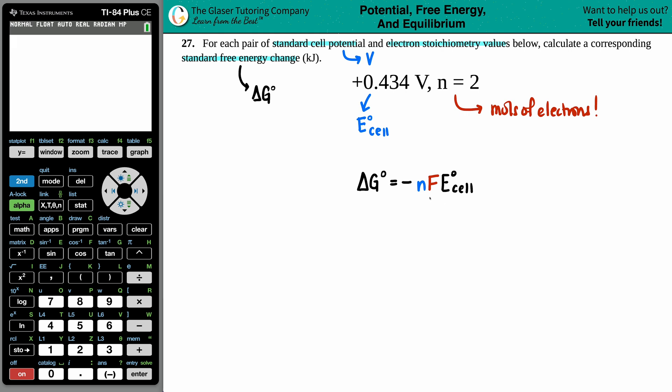Now just know when you're using this formula, the delta G that you're going to get is always going to be in joules.